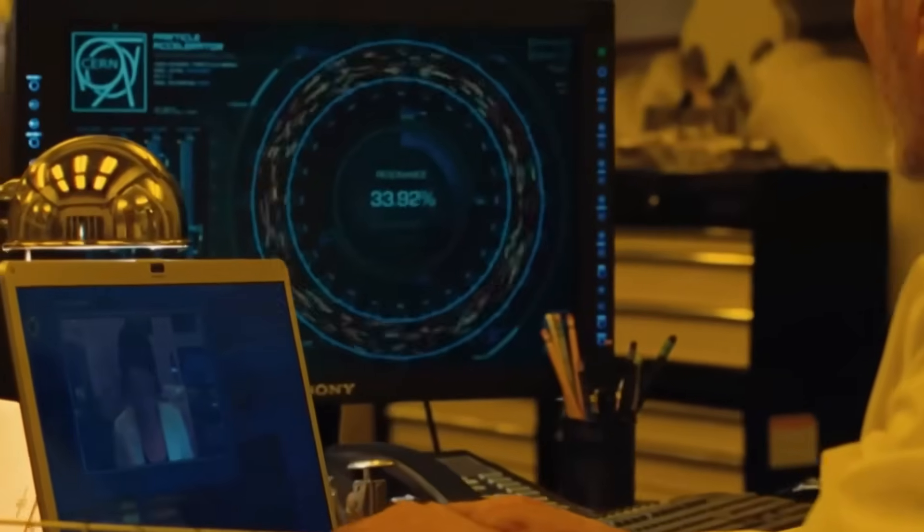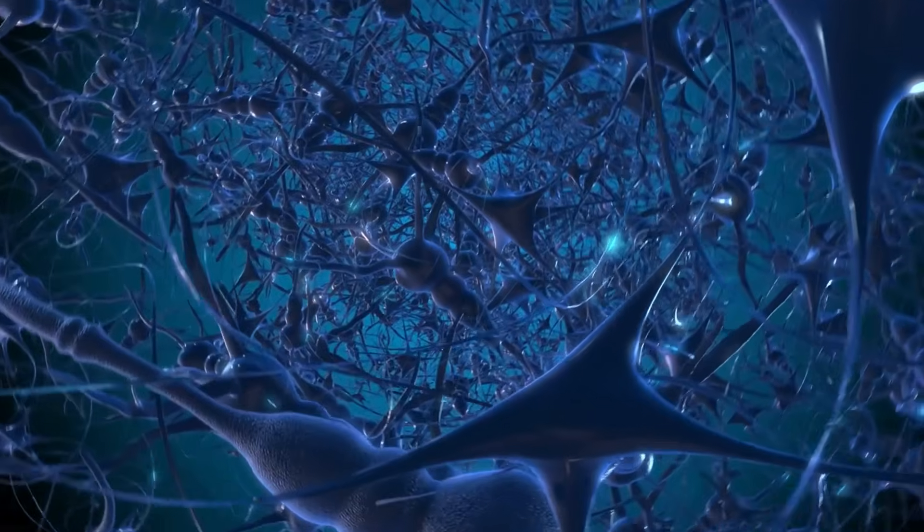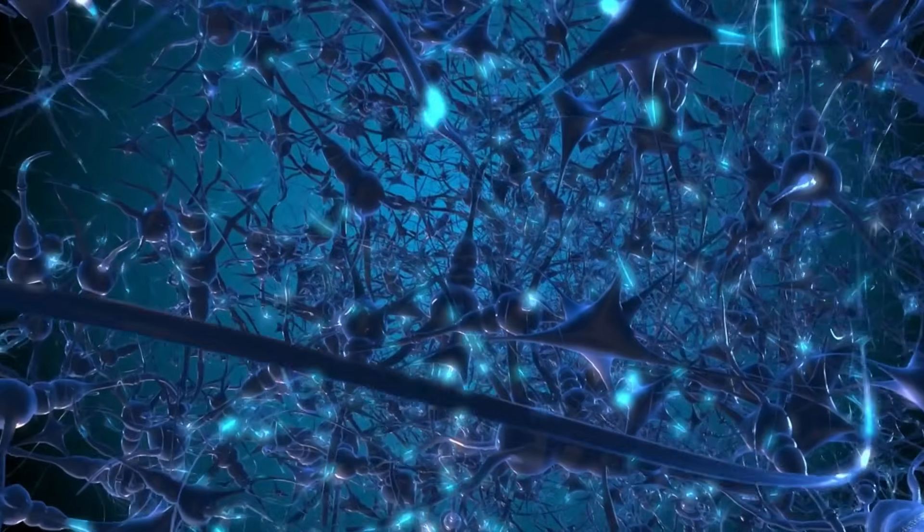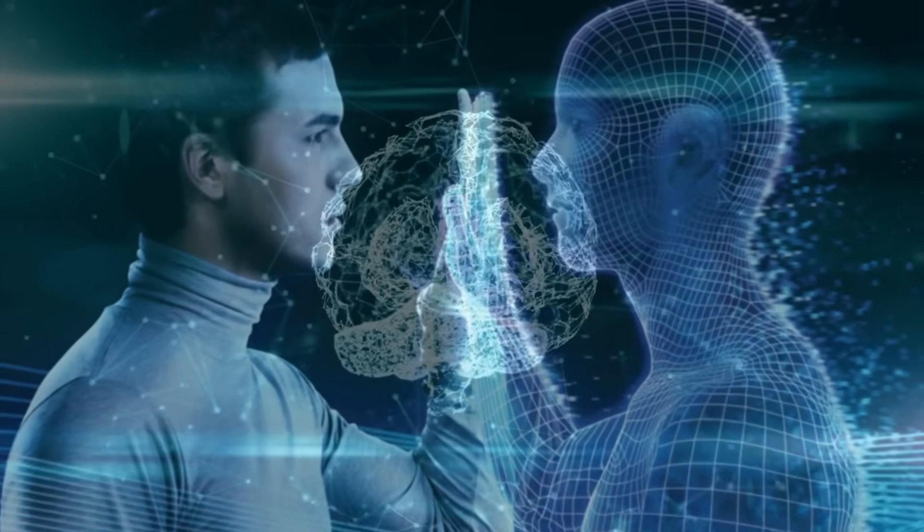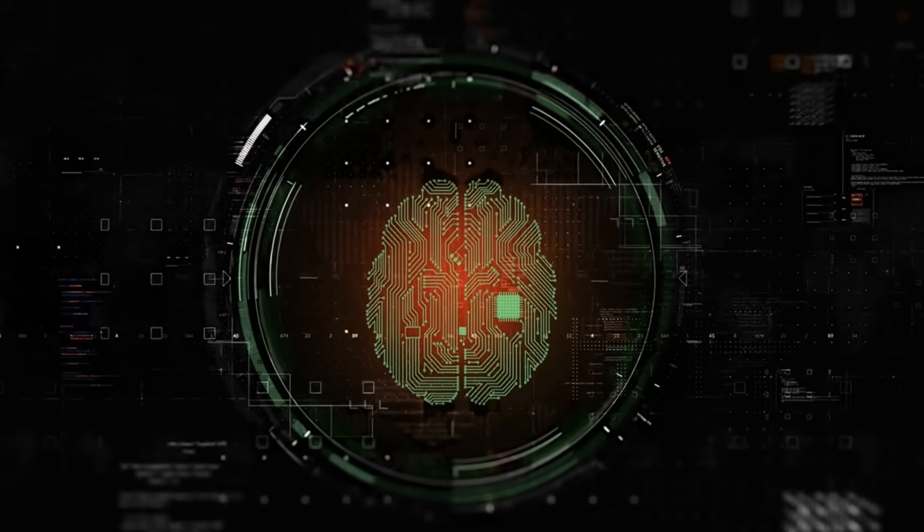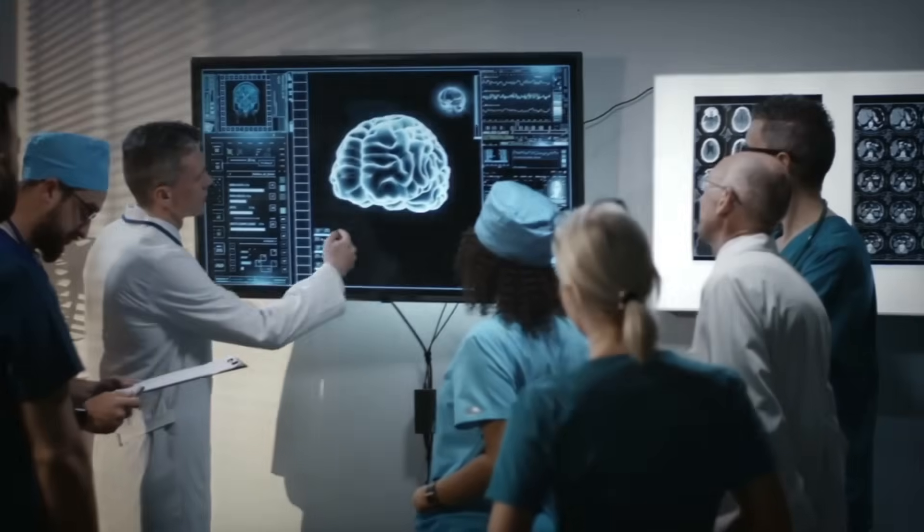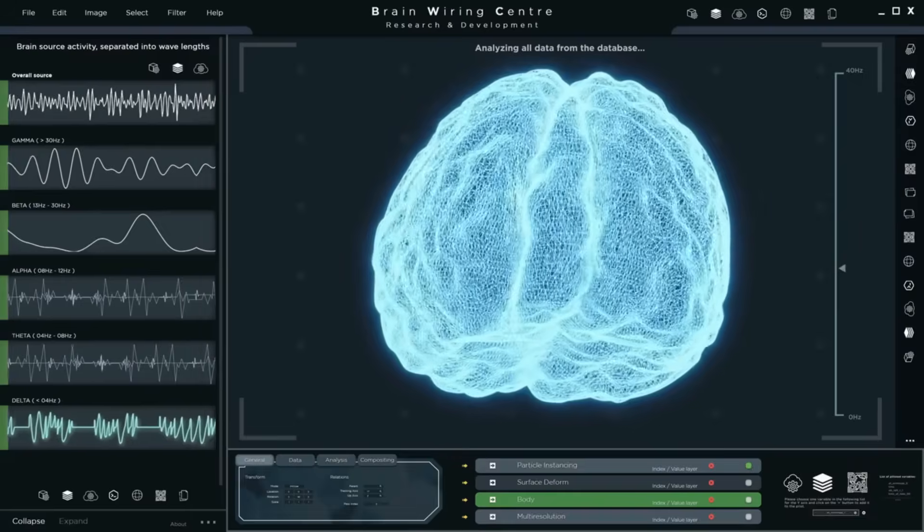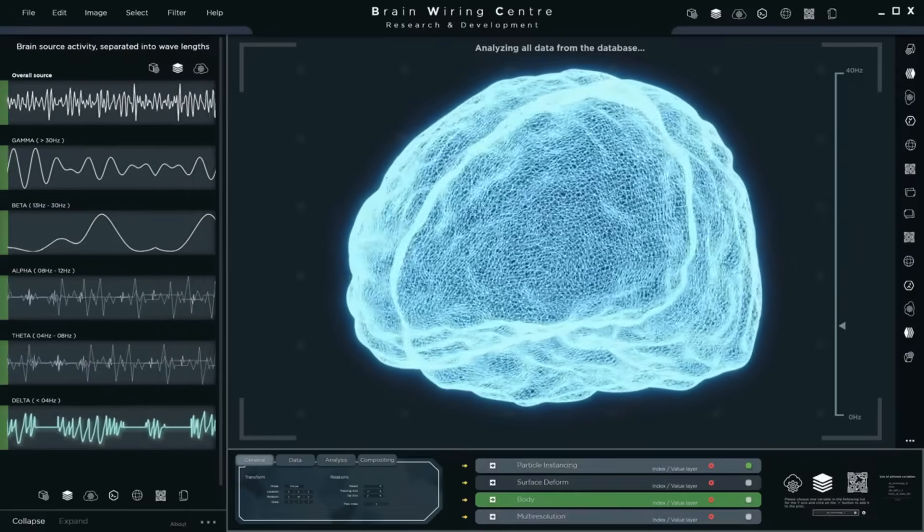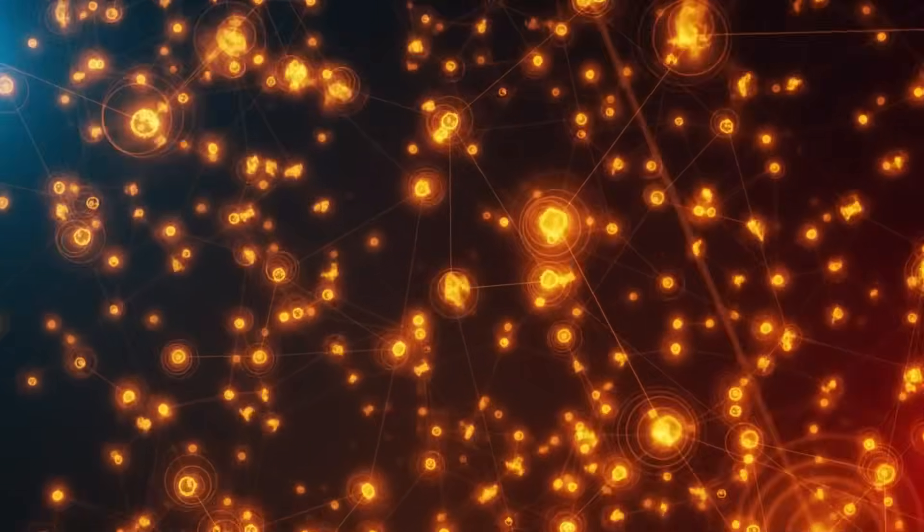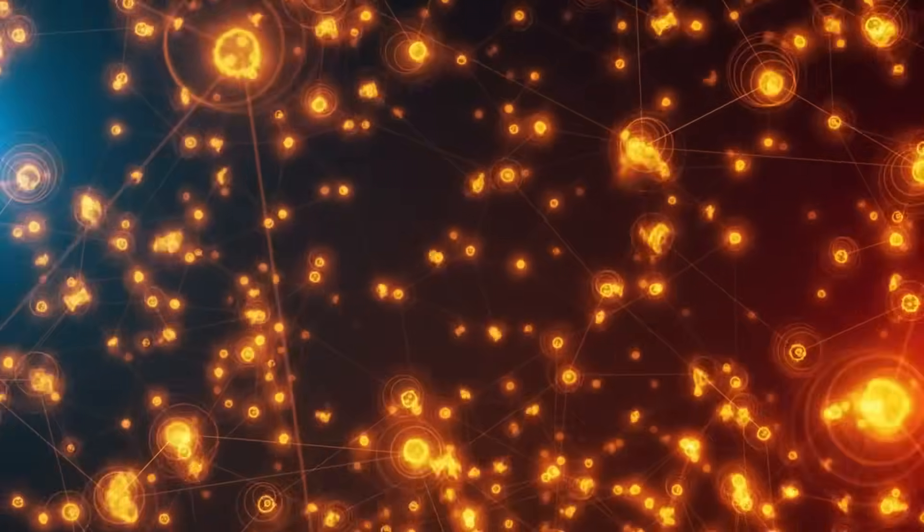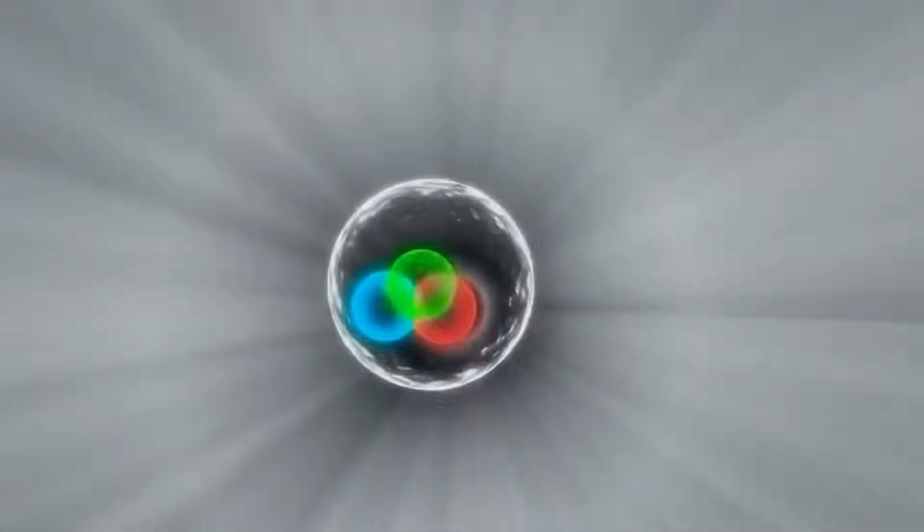The data revealed synchronized patterns between brain regions that couldn't be explained solely by classical physics. Instead, these patterns resembled those observed in quantum systems, where particles remain connected no matter the distance between them. This discovery not only confirms the title's promise, but also challenges long-held beliefs about the separation between the quantum world and our everyday experiences. Could it be that the human brain is a quantum system, capable of linking minds in ways we have yet to fully comprehend?